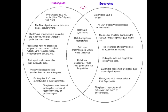Eukaryotes, on the other hand, do have organelles that are wrapped in membranes, so they do have mitochondria, vesicles, Golgi apparatus, and rough and smooth ER. Prokaryotes are smaller than Eukaryotes; Eukaryotes are much larger. Prokaryote ribosomes are also smaller than those of Eukaryotes.